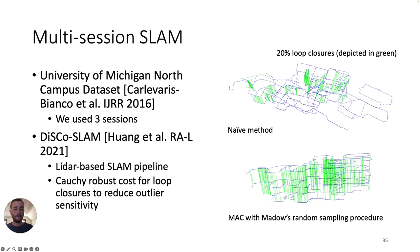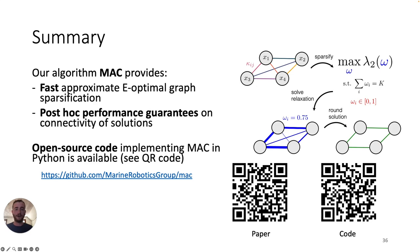In summary, I've presented MAC — an algorithm for fast E-optimal graph sparsification with application to pose graph SLAM. Our algorithm admits formal post-hoc performance guarantees on the connectivity of its solutions, and we've made available an open-source Python implementation. Our paper is also available via the QR code shown on screen. Thank you all for your attention, and I'm happy to take questions over Zoom.